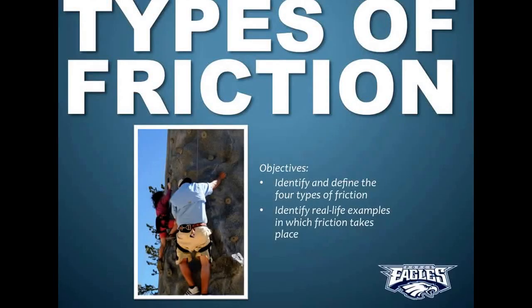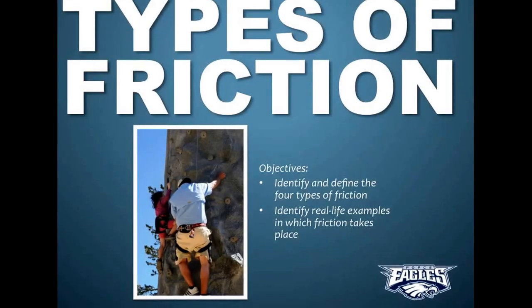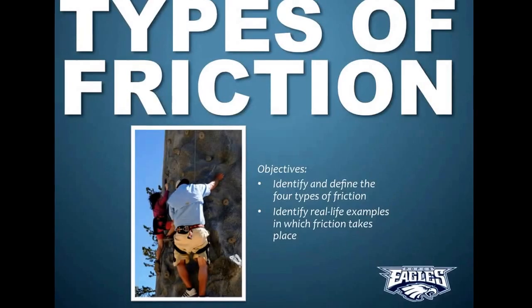The only reason these mountain climbers in this picture are able to stand and hang there is because of friction. Without friction, they would literally just fall right off the face of the cliff. In this video, we'll talk about the four different types of friction, and I'll give you lots of real-life examples so you can identify them in the future.